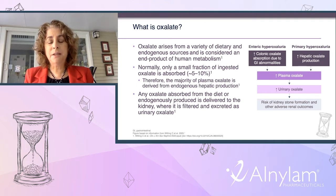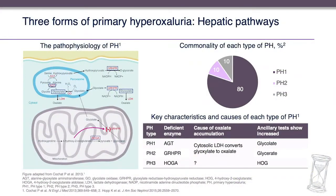Primary hyperoxaluria results from increased hepatic production of oxalate. In the hepatocyte, the enzymes involved in primary hyperoxaluria are AGXT, GRHPR, and HOGA1. Deficiency of AGXT, which converts glyoxalate to glycine, results in increased glyoxalate, which is converted by LDH to oxalate. This is primary hyperoxaluria type 1.